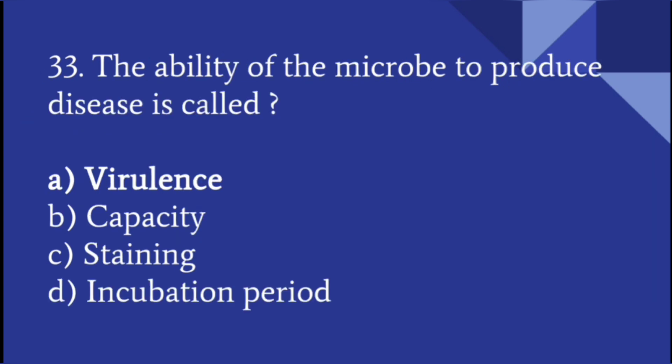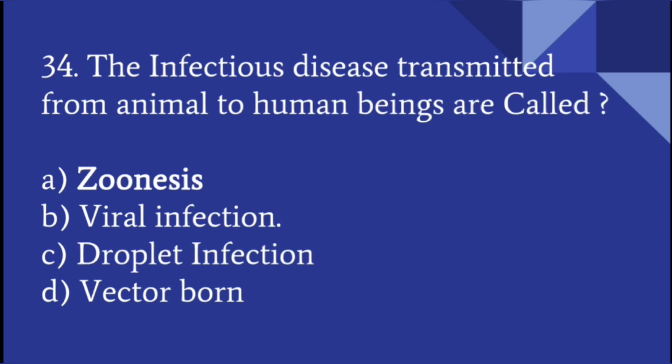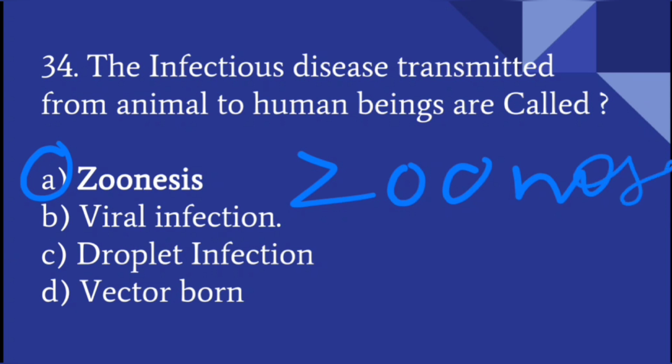The ability of a microbe to produce disease is called virulence. The infectious disease transmitted from an animal to a human being is called zoonosis.